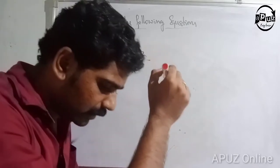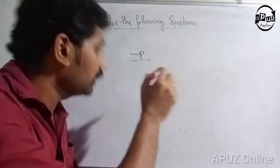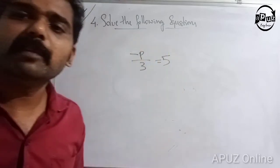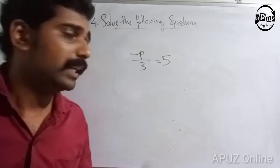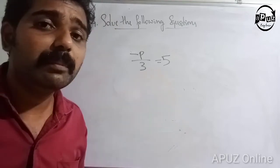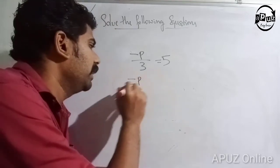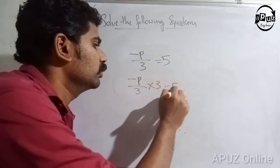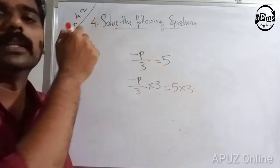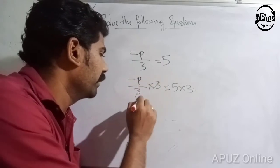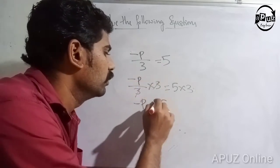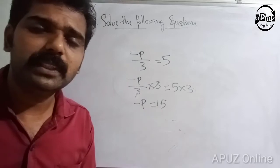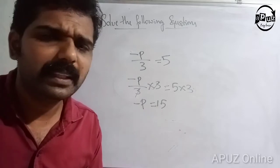Next question: minus p divided by 3 is equal to 5. Multiply both sides by 3: minus p divided by 3 into 3 is equal to 5 into 3. That is minus p is equal to 15.